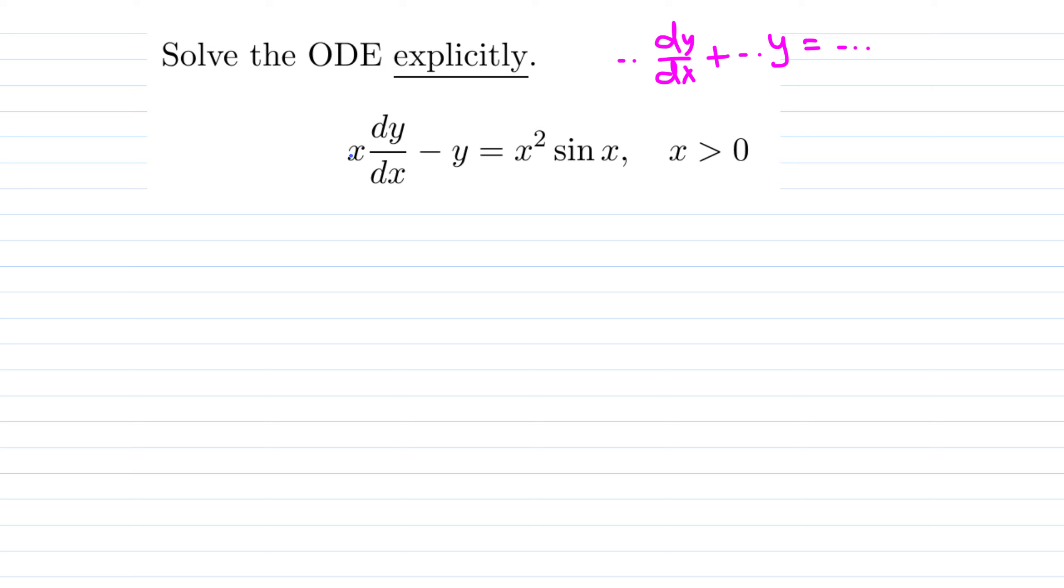Let's divide by x. Then we get dy over dx in the first term, minus y over x. Let me write down as a function of x and y here. Negative 1 divided by x equals, we are dividing by x, so x sine x.